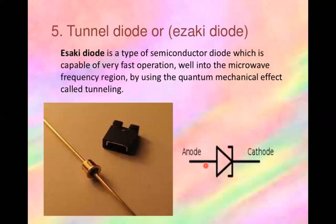The tunnel diode, also called the Esaki diode, is a type of semiconductor diode that has effectively negative resistance due to a quantum mechanical effect called tunneling. Tunnel diodes have a heavily doped P-to-N junction that is about 10 nanometers wide.